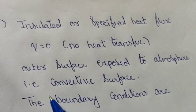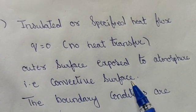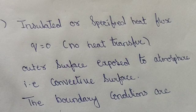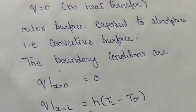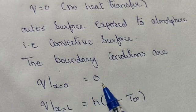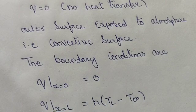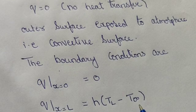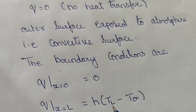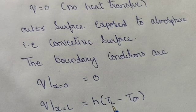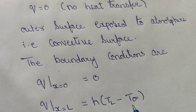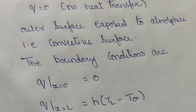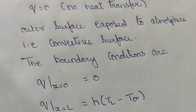The outer surface exposed to the atmosphere is called the convective surface. The boundary conditions here are: q at x equals zero equals zero, and q at x equals L equals h multiplied by (T_L minus T∞), where T_L is the outside surface temperature, T∞ is the atmosphere temperature, and h is the convective heat transfer coefficient.